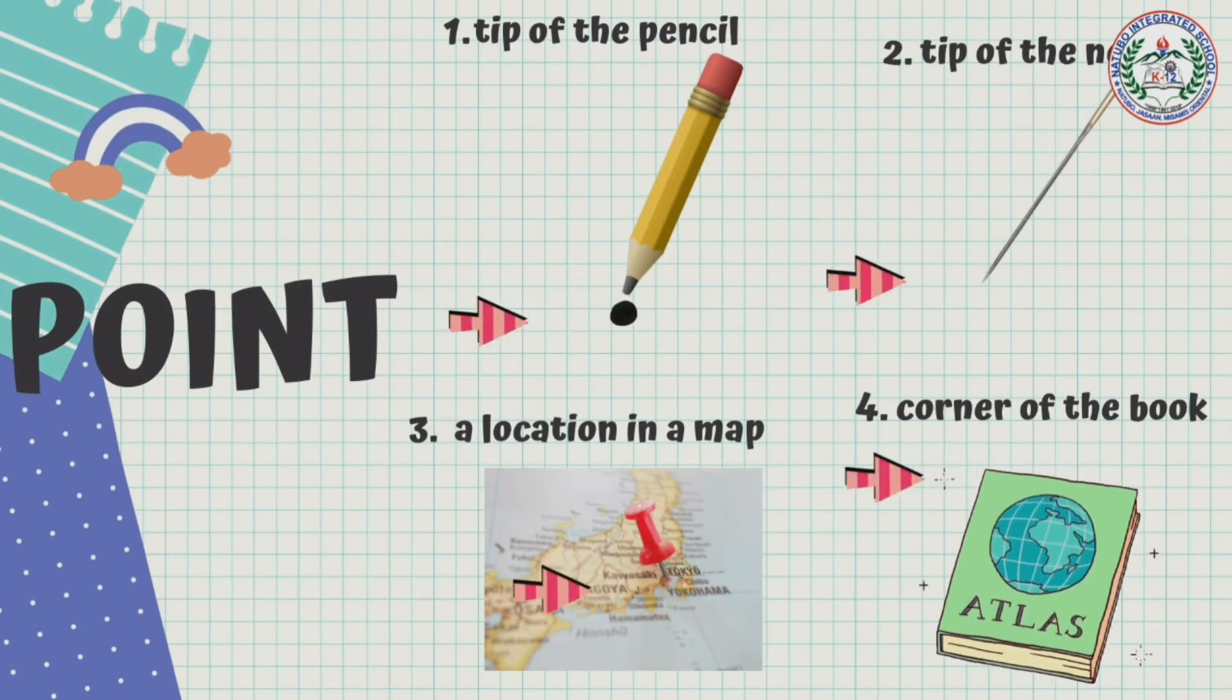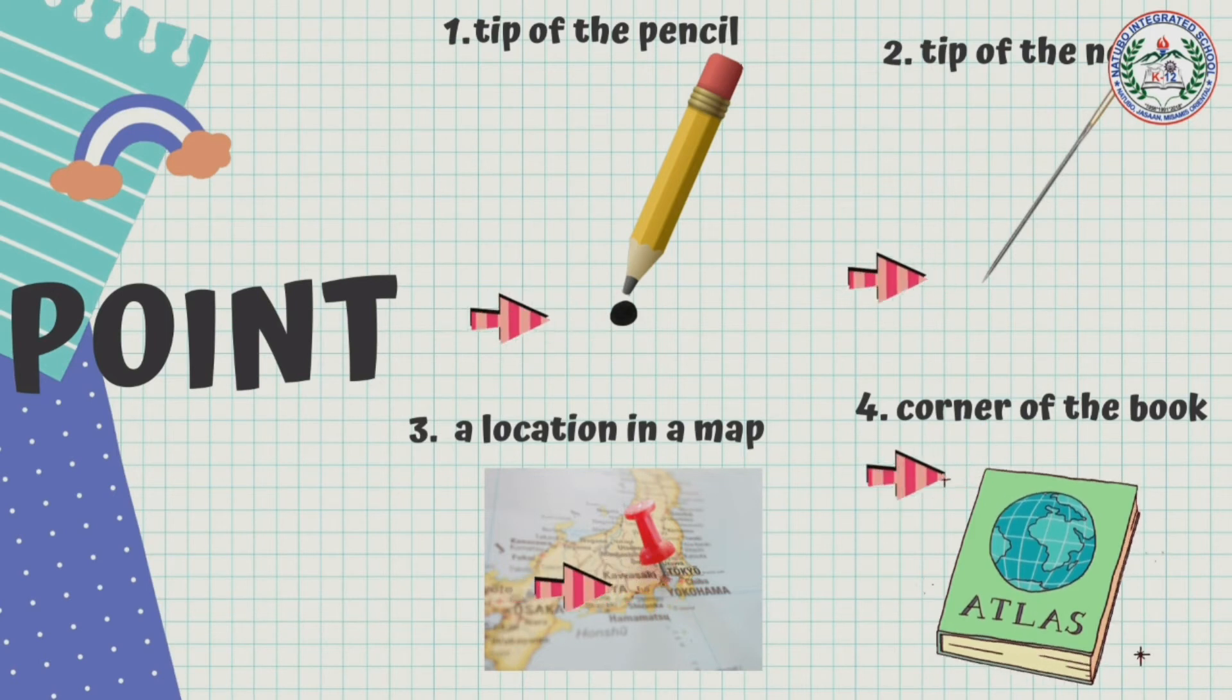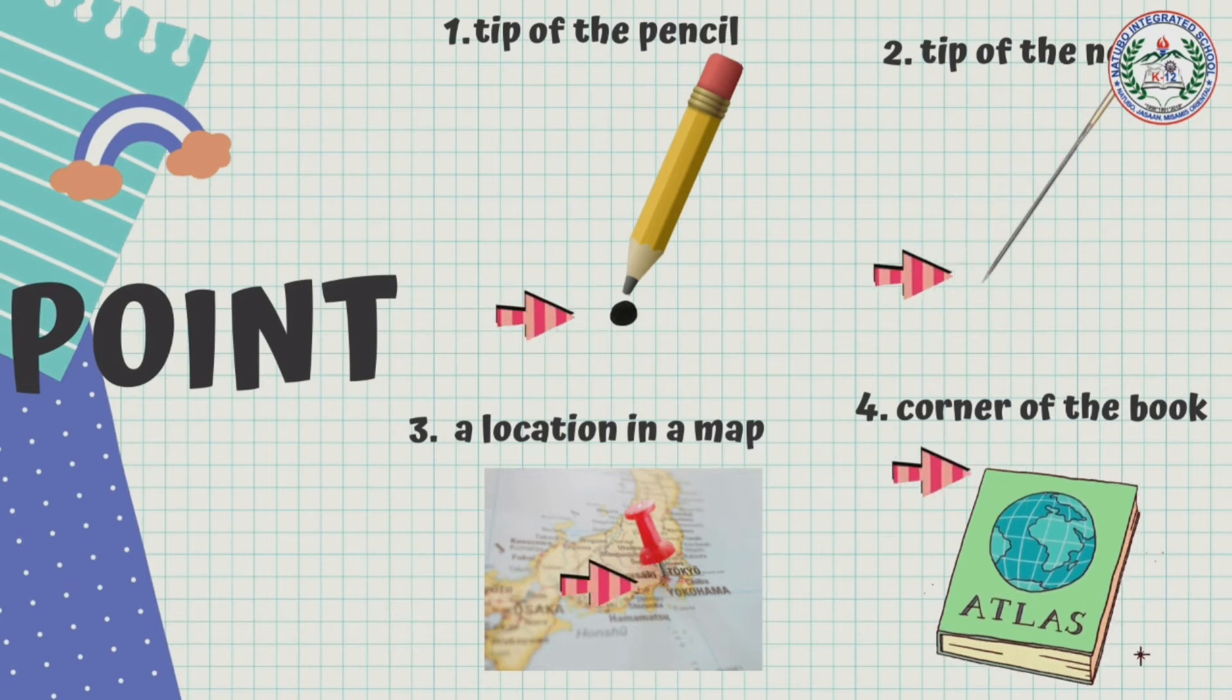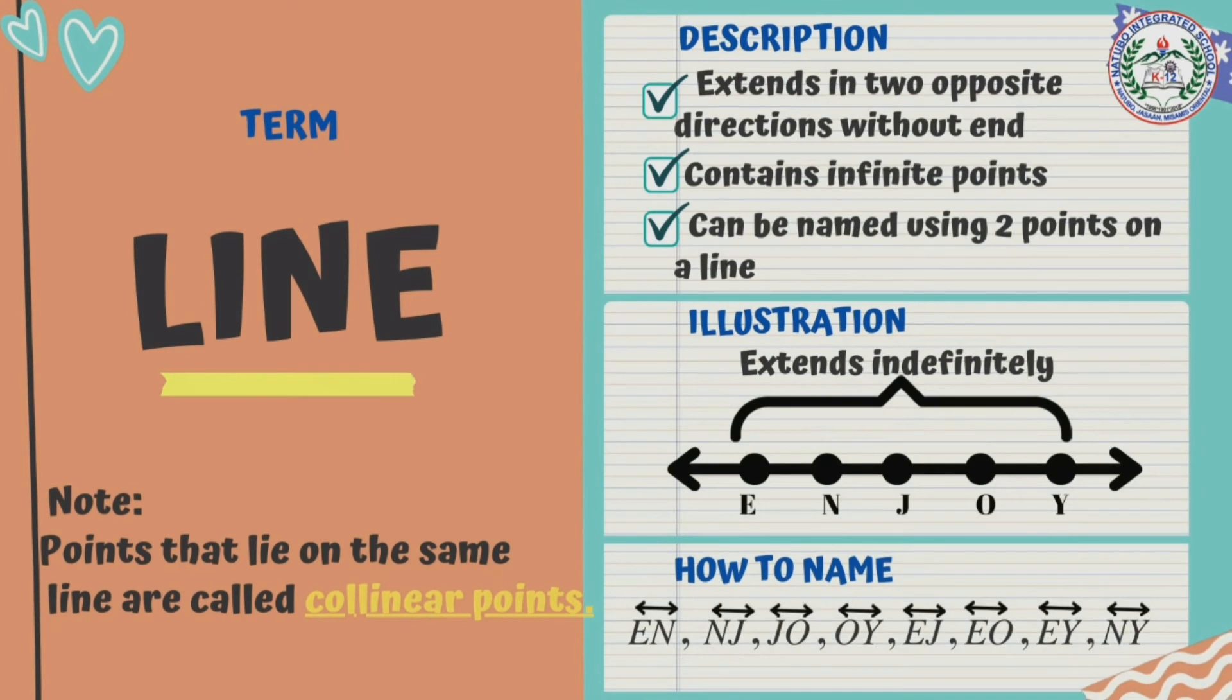We have one, tip of the pencil; two, tip of the needle; three, location in a map; and four, corner of the book. Second is the line.